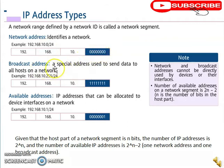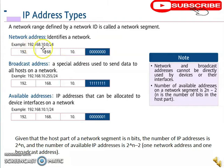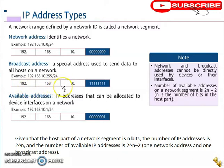The broadcast address is a special address used to send to all hosts on a network. To find it, we set all host bits to one. Since Class C has 8 host bits, setting them all to one gives a broadcast address of 192.168.10.255.